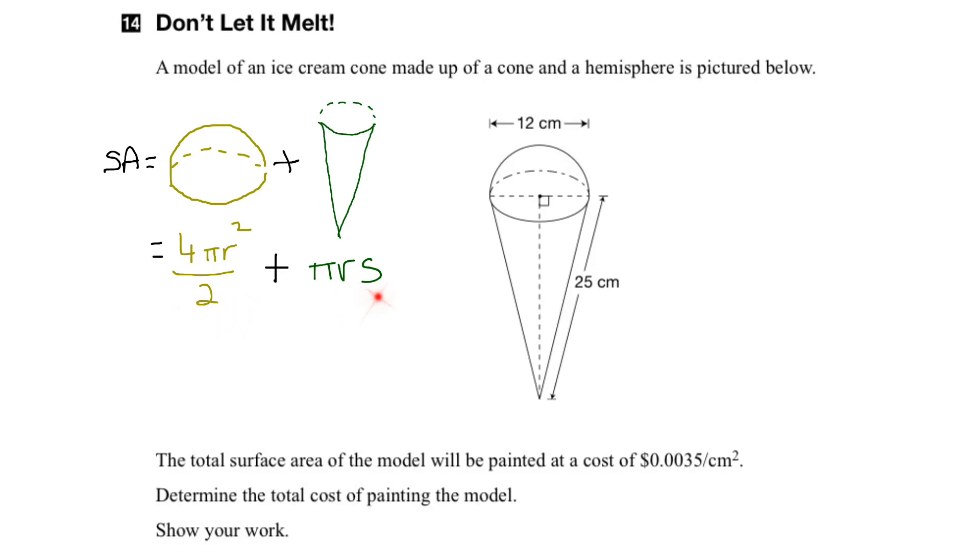So our equation here has a couple of variables, r and s. So let's see from our diagram if we can figure those values out. So we notice right away that both the hemisphere and the cone share the same radius, which is from here to here. We're given the diameter of 12 cm, which represents the entire distance across.